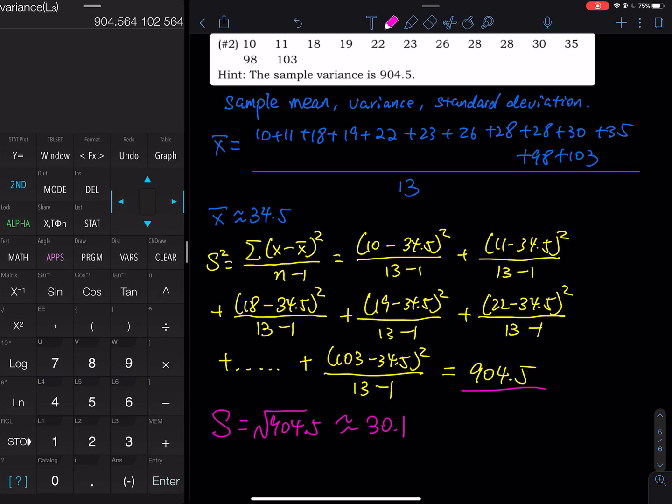So there is your sample variance, not population. Sample variance. 904, I round this up, 904 point—oh, it is supposed to be 904.6, right? It's okay. 904.5. So that's how you find the sample variance.